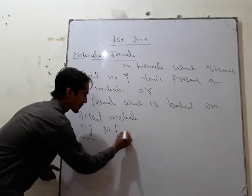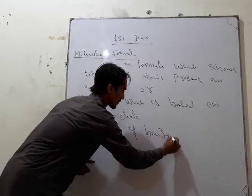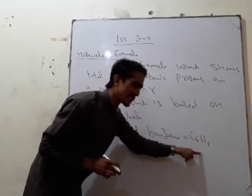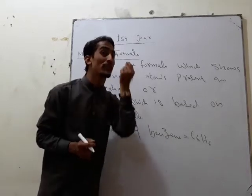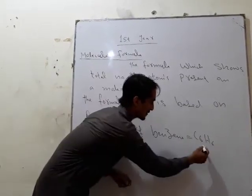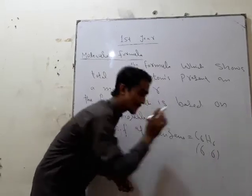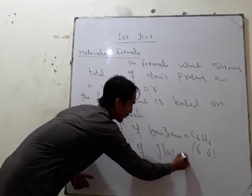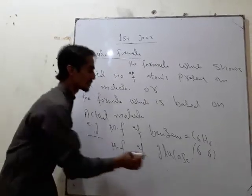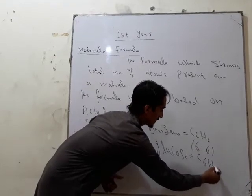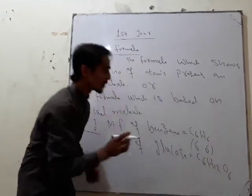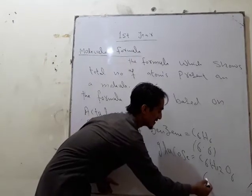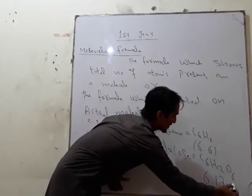The Molecular Formula of benzene is C6H6. From this formula it is clear that one molecule of benzene is composed of 6 carbon atoms and 6 hydrogen atoms. Similarly, the molecular formula of glucose is C6H12O6. From this formula it is clear that one molecule of glucose is composed of 6 carbon atoms, 12 hydrogen atoms, and 6 oxygen atoms.